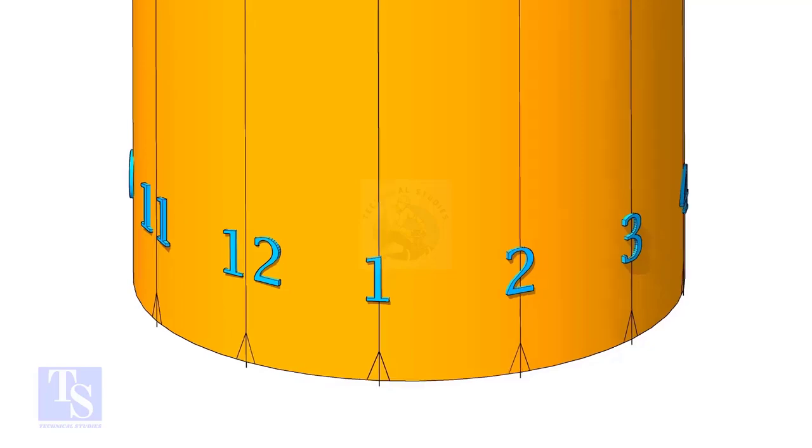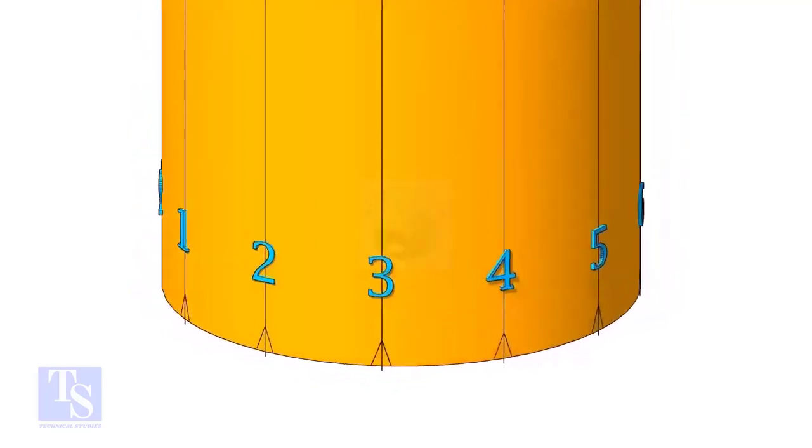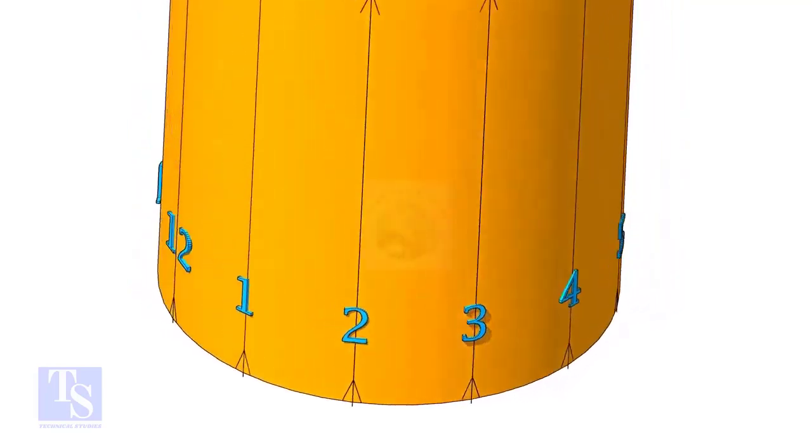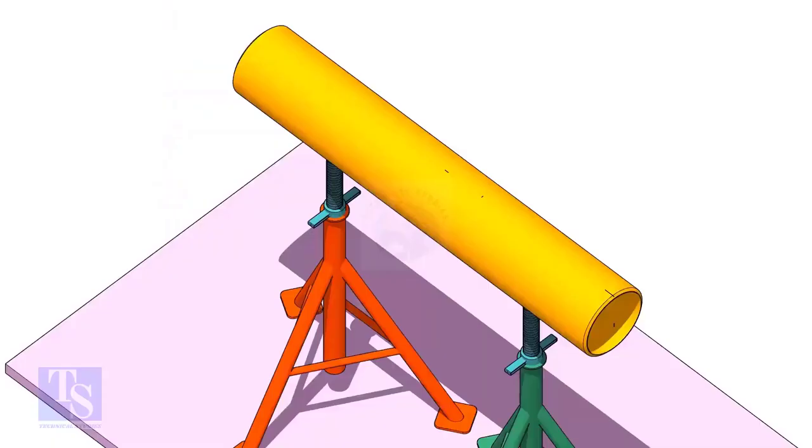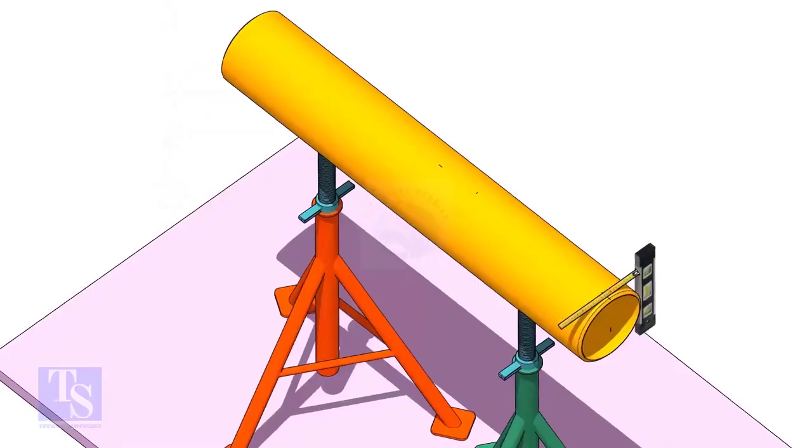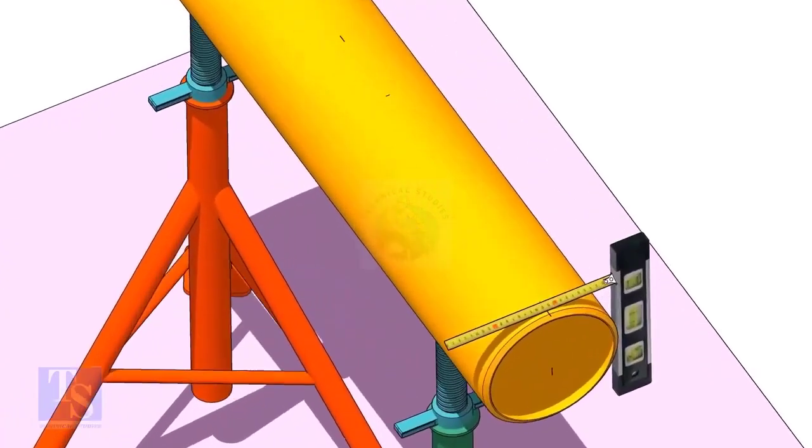Divide the branch pipe into equal parts. In this case, I divide the pipe into 12 parts. Mark the center line of the header on the top and the bottom.